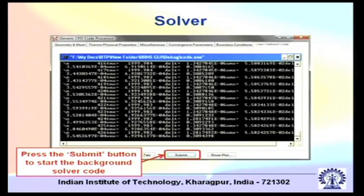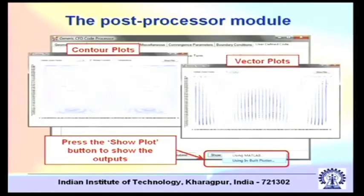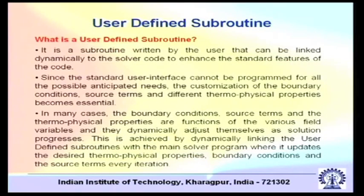Then you press the submit button to start the background solver code. It will run and show you the level of iterations and how it is converging. Then you can go to the post-processing parts. Once results are obtained, you can show contour plots — these are ISO lines, meaning lines with constant values — and vector plots showing the velocity field. Now let us go to the user defined subroutine, also called a user defined function. Subroutine is a term borrowed from Fortran and function is a term borrowed from C, but in either way it means the same.